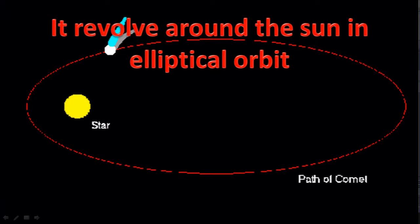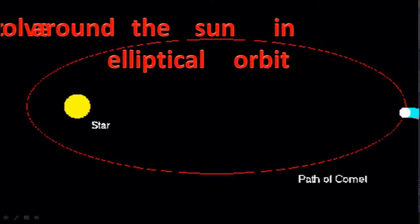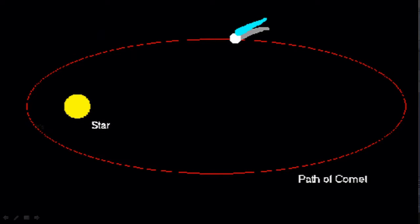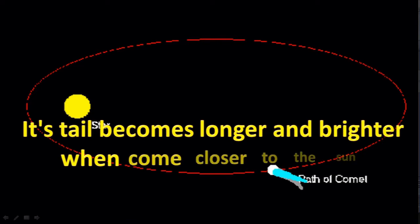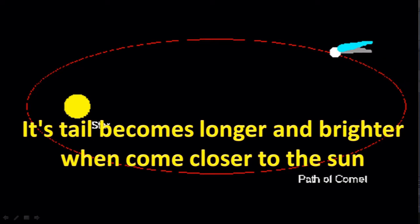It revolves around the sun in elliptical orbit. Its tail becomes longer and brighter when it comes closer to the sun.